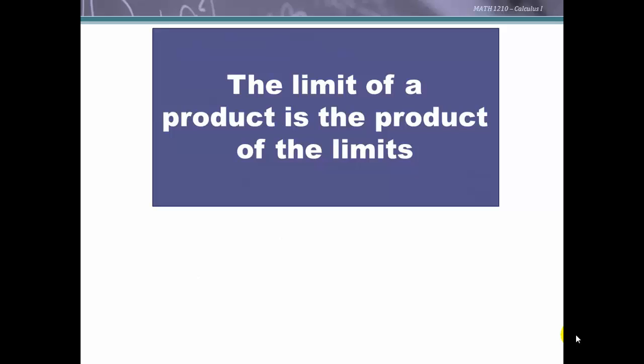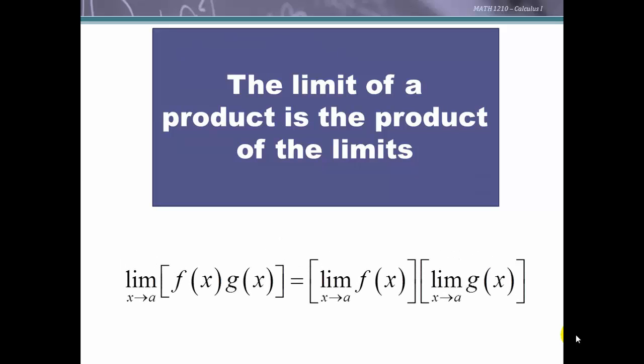The limit of a product is the product of the limits. With two functions multiplied together, we can multiply them and then find the limit as x approaches a, or we can find the limit of each function separately as x approaches a and then multiply the results.